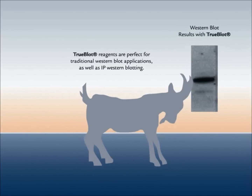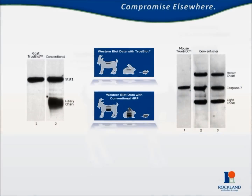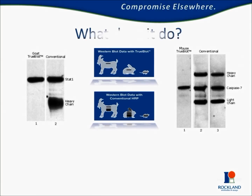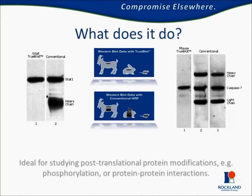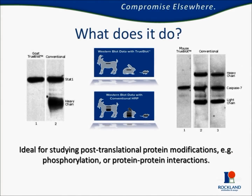The Trueblot system is a way to produce publication quality immunoblots. Western blots and other immunoblotting assays are some of the most commonly used assays in biotechnology.